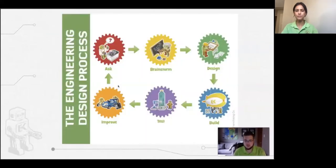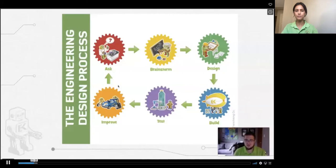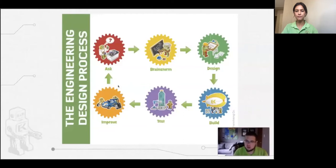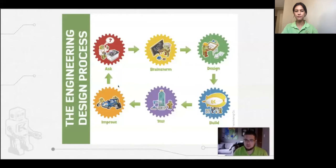Here's the engineering design process with six steps. Ask is where we ask questions about the problem we're trying to solve. Brainstorm is where we take all of our ideas and think about our variables — things we might not have access to. For example, if you wanted to make a buzzer using electricity, but we don't have access to electricity for this lesson, so we'd have to do something else. Design is taking all our ideas and coming up with a proposed solution.